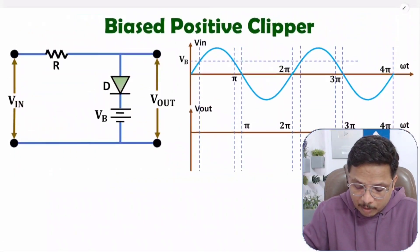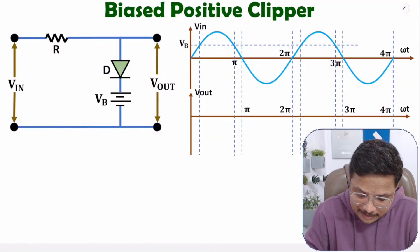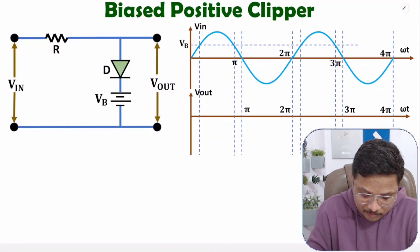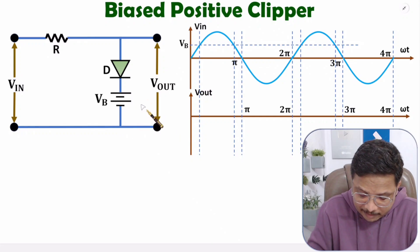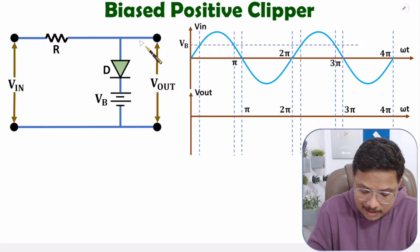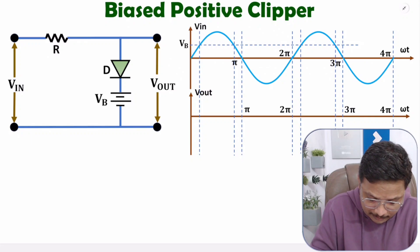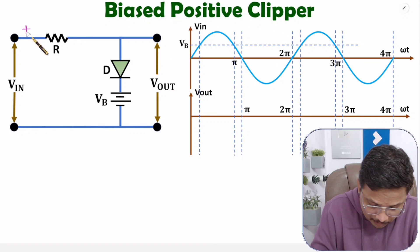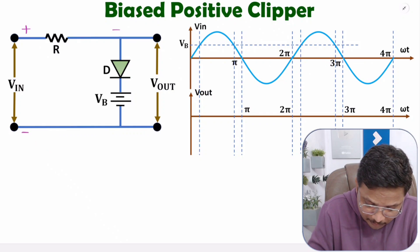Let me explain the first problem, that is biased positive clipper. To understand this you need to understand first what is input and what is output. The input is a sinusoidal input that you can observe, and the output that we take from these two terminals. Now to understand working, let us consider the positive half cycle of V-in. During positive half cycle, this terminal of V-in is positive with respect to this.